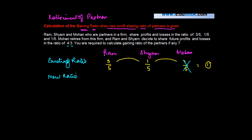Ram and Sham decide to share future profits and losses in the ratio of 4 is to 3. Till now they were sharing profits in the ratio of 3/5, 1/5, and 1/5. This guy has moved out, so they are going to share the profits in the ratio of 4 is to 3. The sum of the numerators is 7, so I can also write this as 4/7 and 3/7. You are required to calculate the gaining ratio of the partners, if any.